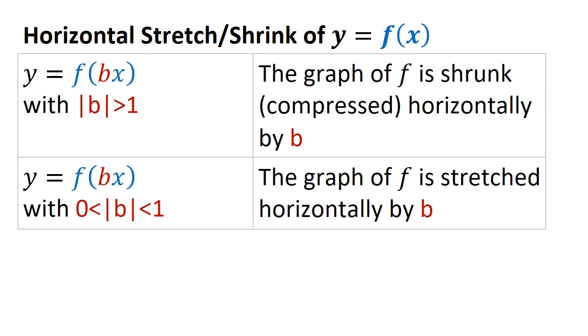Now we want to talk about inside the argument of the function, a horizontal stretch or shrink. Notice what we're looking at here is y equals f of bx. So it's inside the argument of the function, it's going to impact the x coordinates, kind of the opposite of what our brain wants. So if I'm multiplying the x value by some value with absolute value greater than 1, we'd like that to be a stretch, but it's not. It's a shrink.